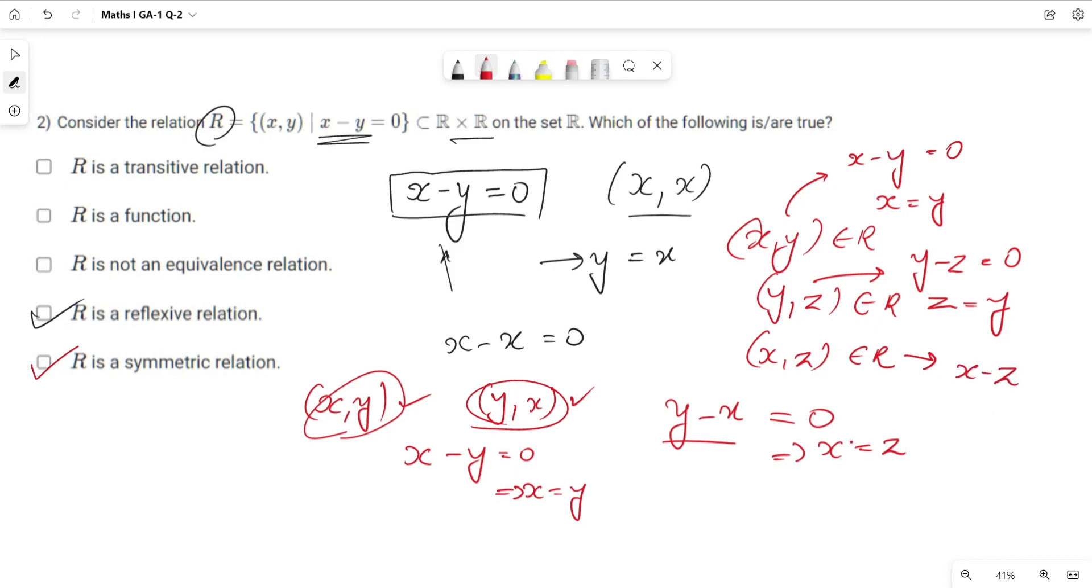To prove the third equation, we write x - z, and we know x = z, that's why x - z = 0. Hence (x, z) also belongs to R, so R is also a transitive relation. If a relation is symmetric, reflexive, and transitive, then R is an equivalence relation.